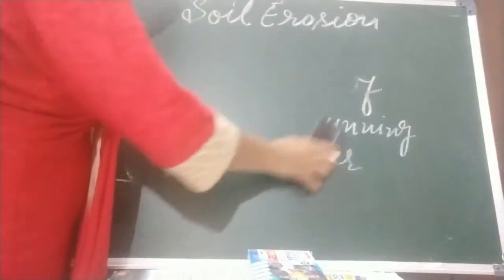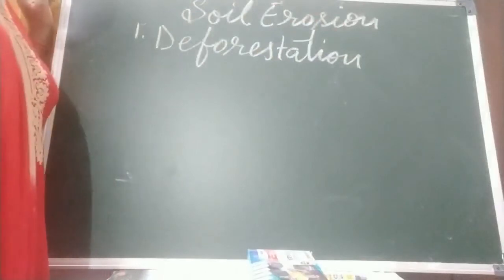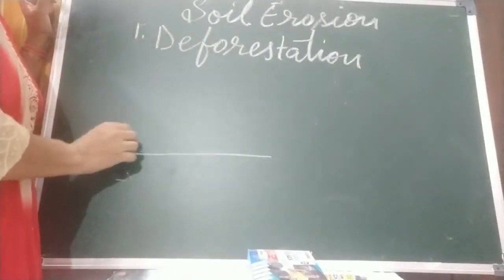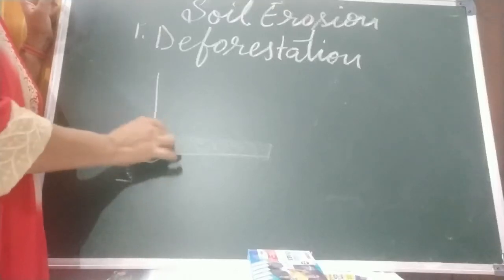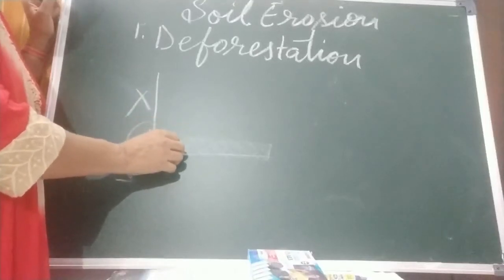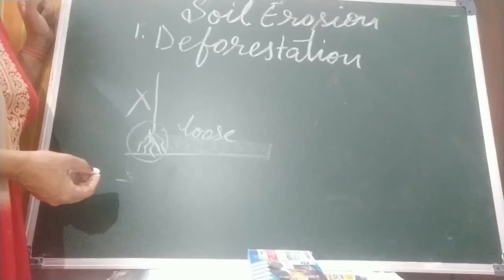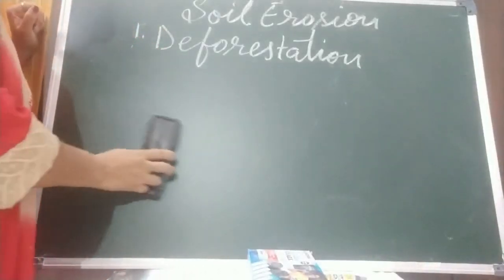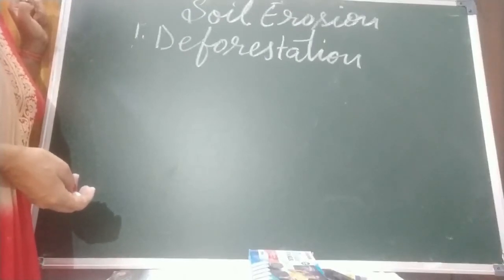What are the major causes of soil erosion? The first one is deforestation. The removal of trees on a large scale is known as deforestation. The soil holds the roots, and the roots also hold the soil. When plants are not there, the soil remains loose and will move away with running wind and water. When trees are removed, soil particles are left loose and can easily be carried away by running water and wind.